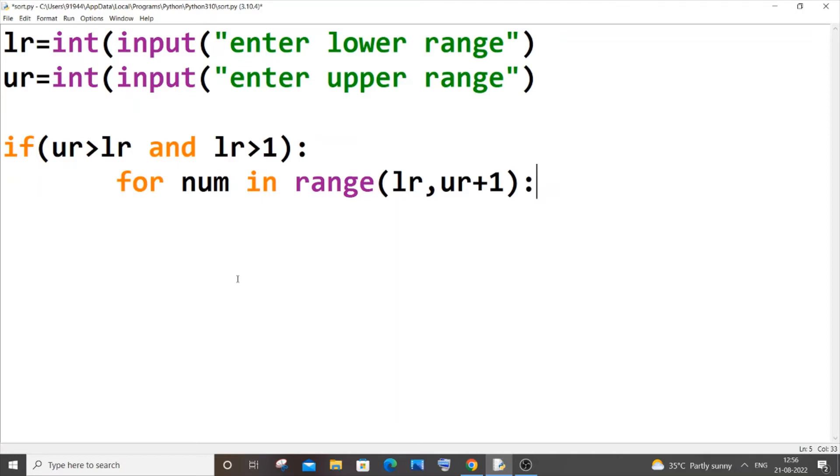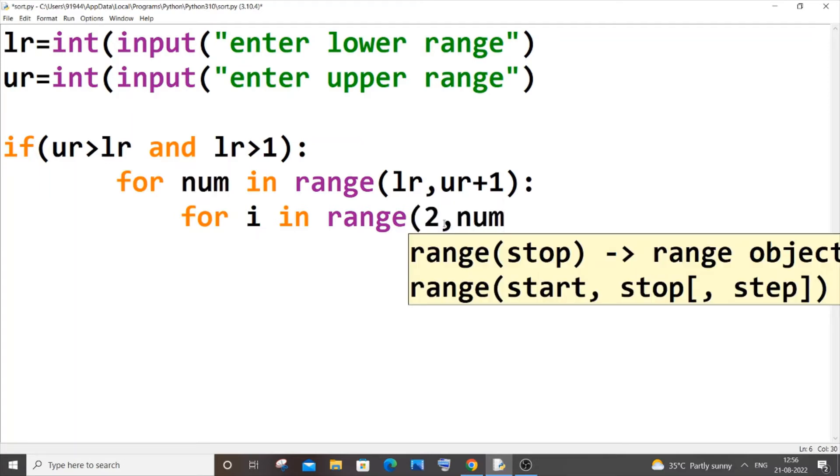Inside this for loop we will be having another for loop. So just come here and it's going to be for i in range, and this for loop is going to iterate from 2 till this num. So it's going to be 2 comma num.